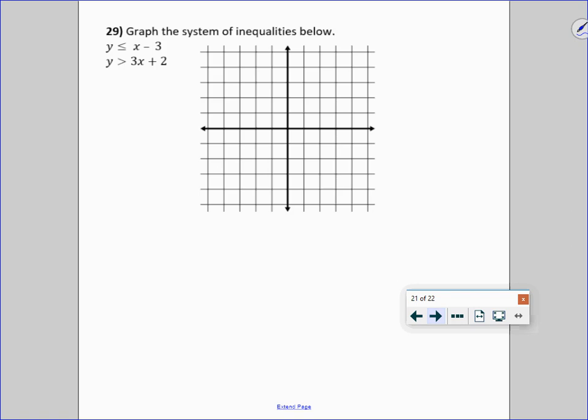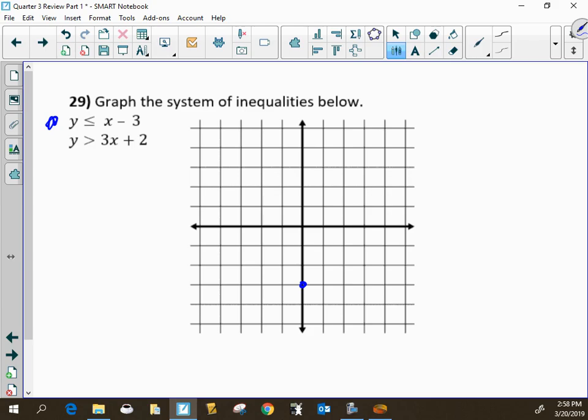All right, last two problems, graphing the system of inequalities. So for the first one, the y-intercept is at negative 3, but the slope is going to be 1. And because its y is less than or equal to, this will be a solid line. Now before I shade, from this one I will be shading down. So I will be shading this region, but I want to shade the intersection. So I am going to hold off shading until I draw the other line.